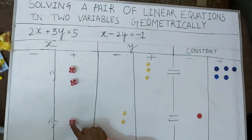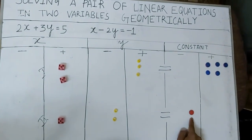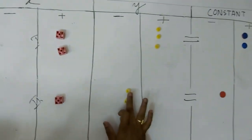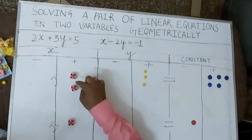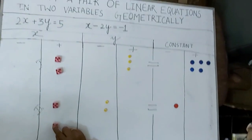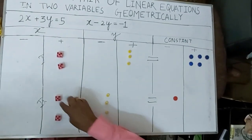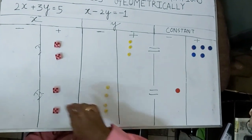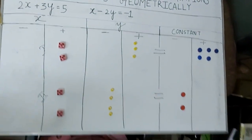Now, for each x in the second equation there are 2 y's, and for each x there is 1 negative 1. I want to make 2x to match the first equation, so for this extra x I also take 2 negative y's on the negative side, and one more negative 1, giving me the doubled second equation ready for subtraction.